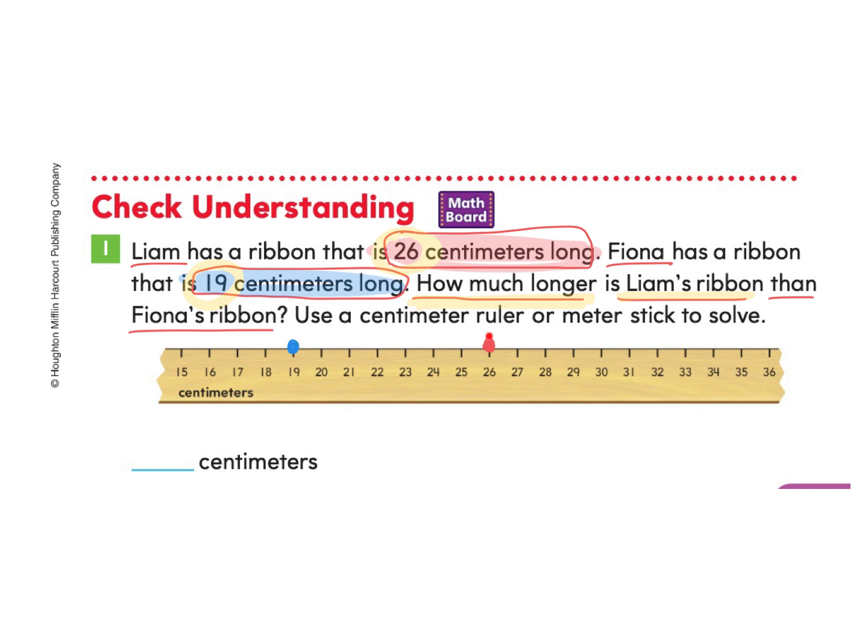So I can count 1, 2, 3, 4, 5, 6, 7. And I can go the other way. 1, 2, 3, 4, 5, 6, 7. Whichever way I look at it, there is a difference here of 7 centimeters.